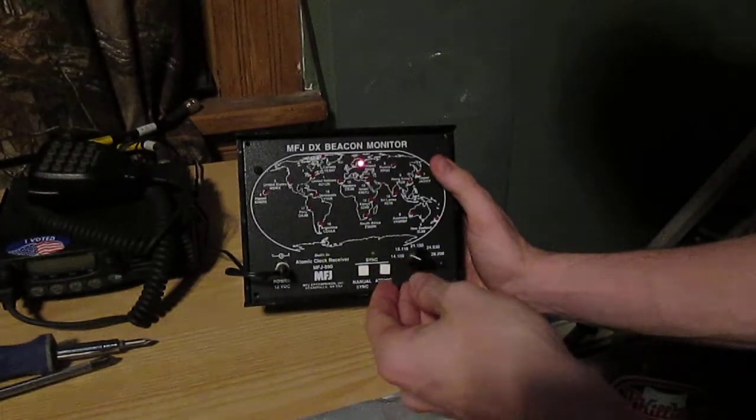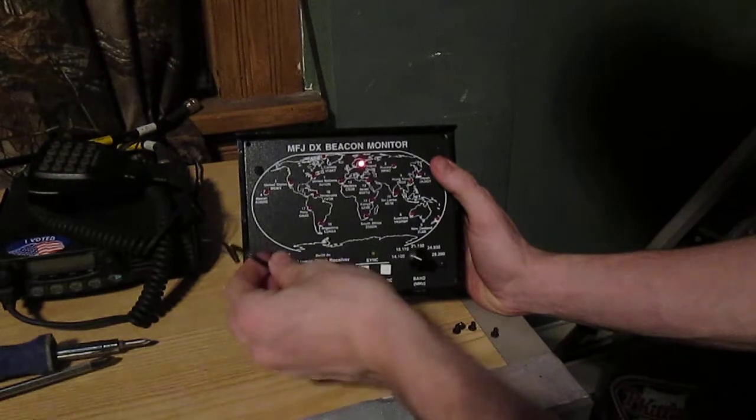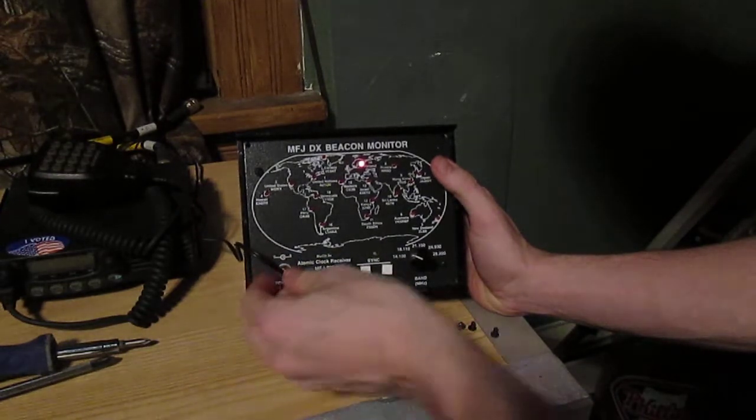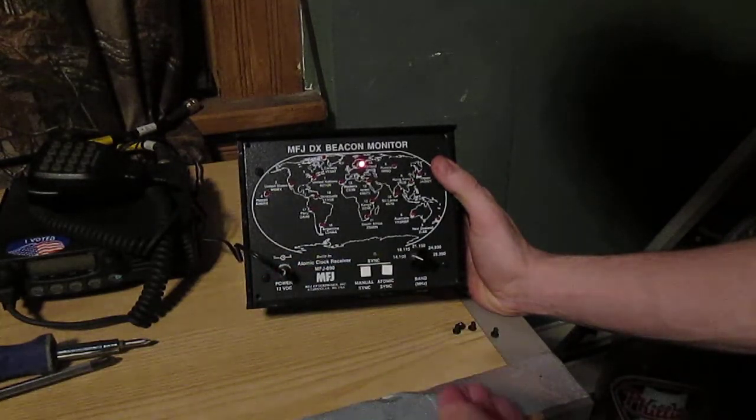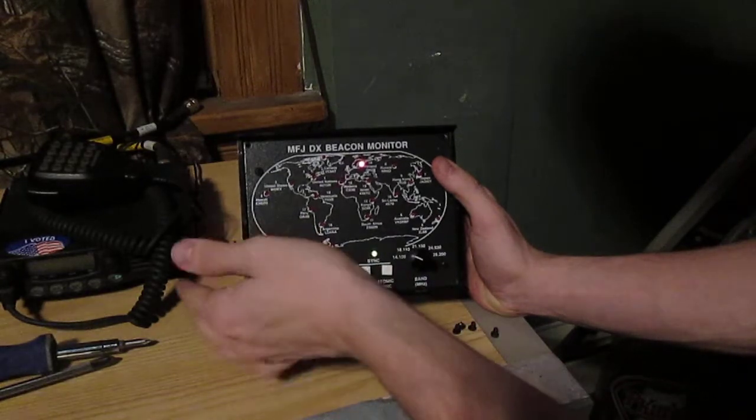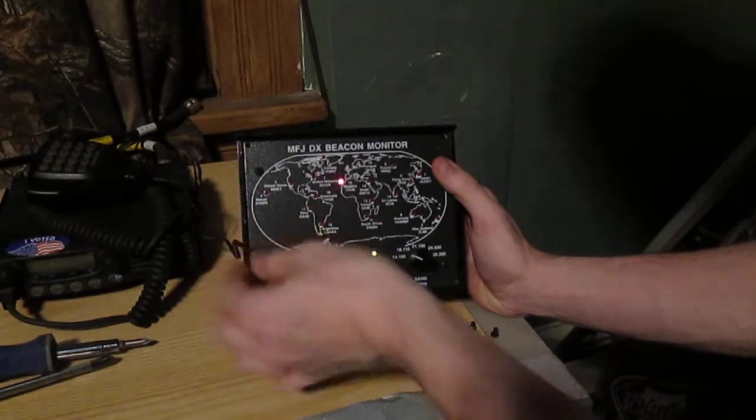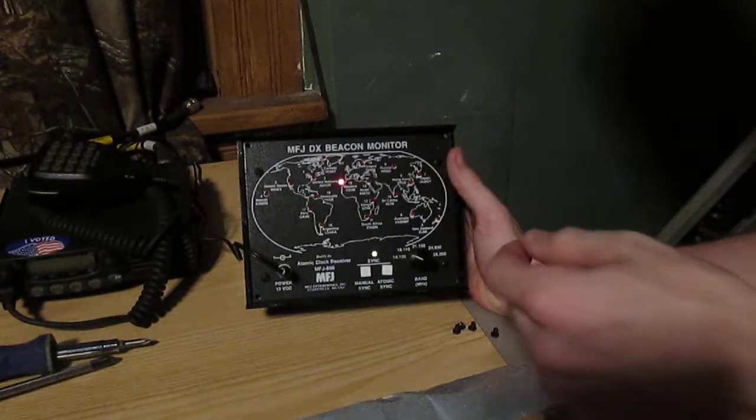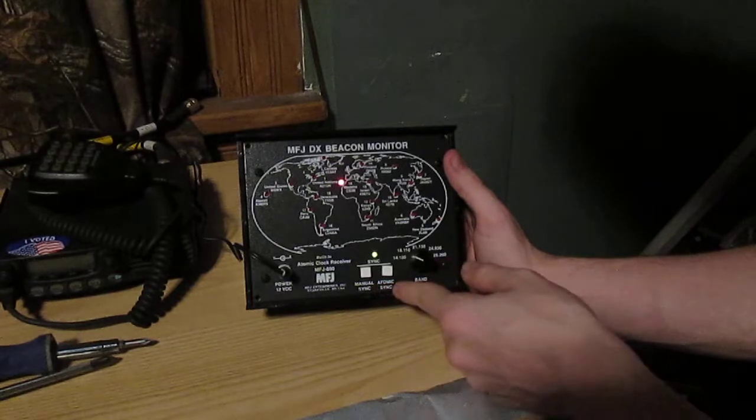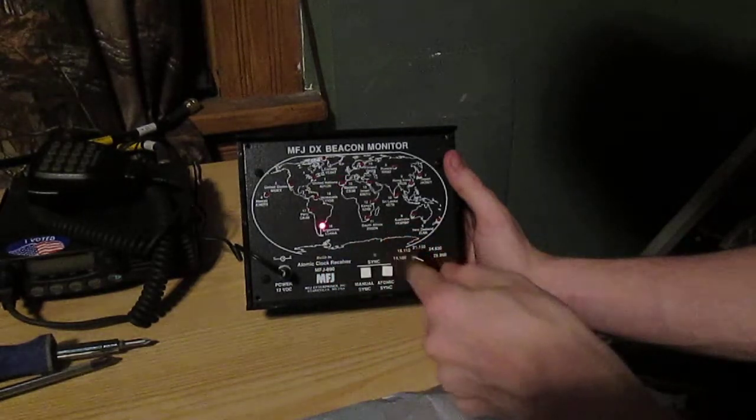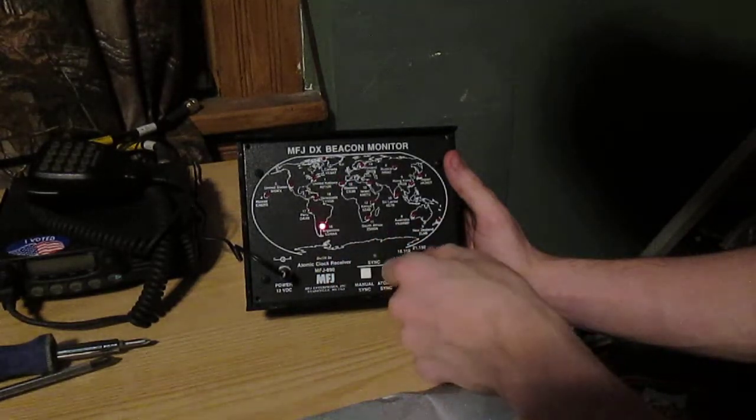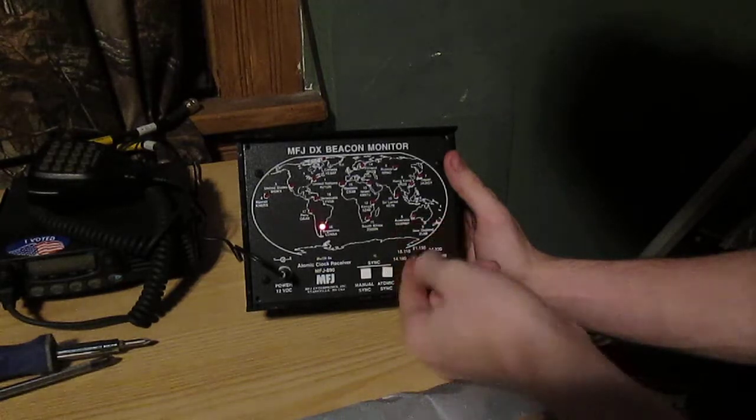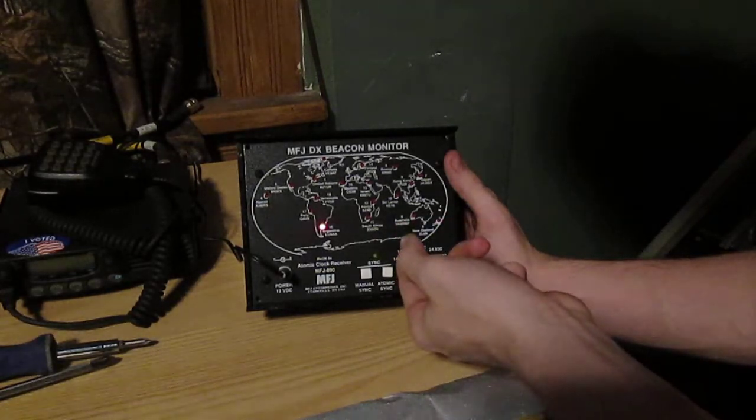So when you buy this thing, you're going to get a 12-volt wire for it that you put in your power supply for your radio. Or, which I had to do, you had to buy separately the adapter that you plug in the outlet. Now with this, you got the manual sync and you got the atomic which will do the atomic clock. And then you got the megahertz, the 14.1 megahertz which would be the 20 meters.